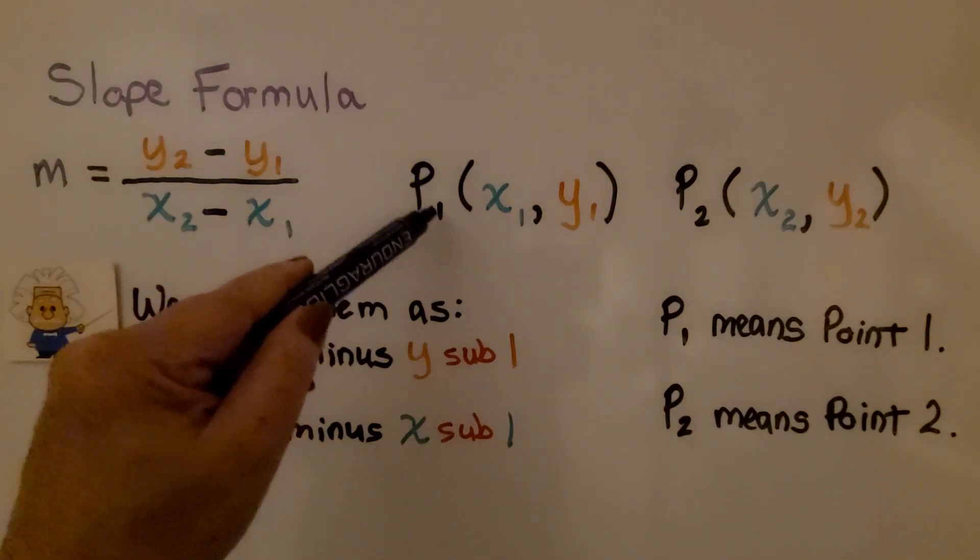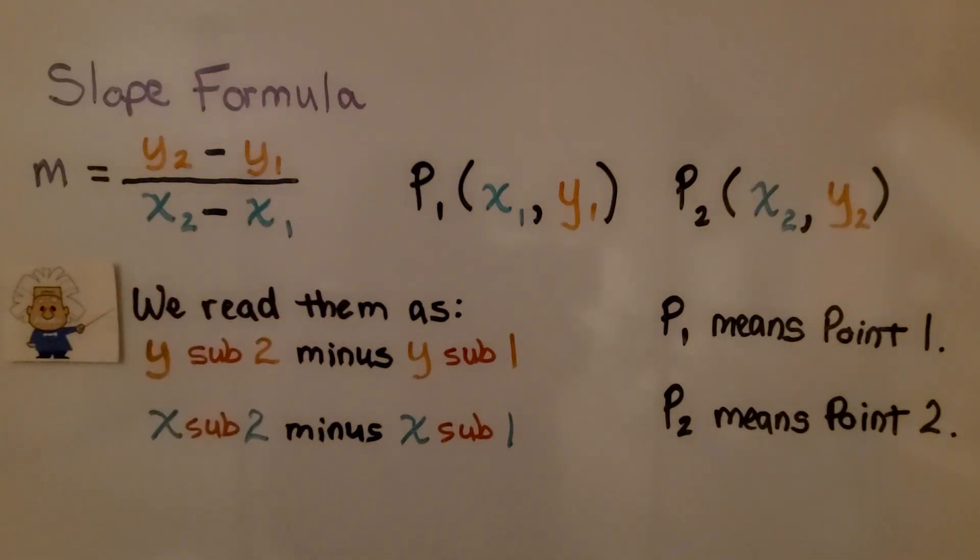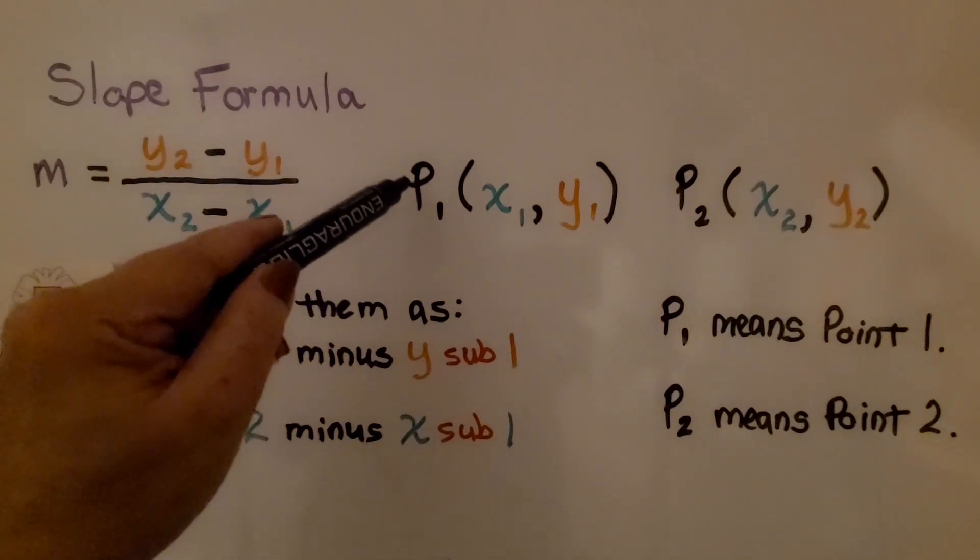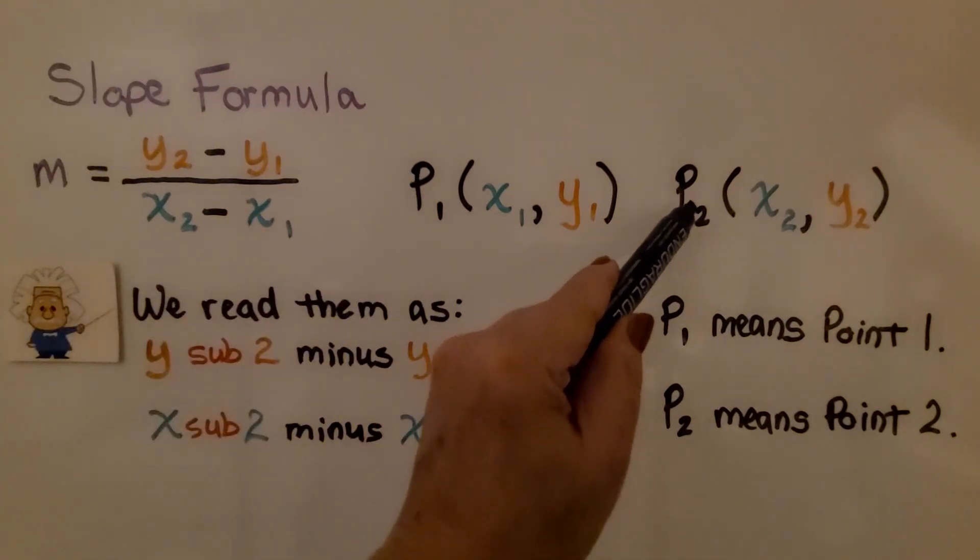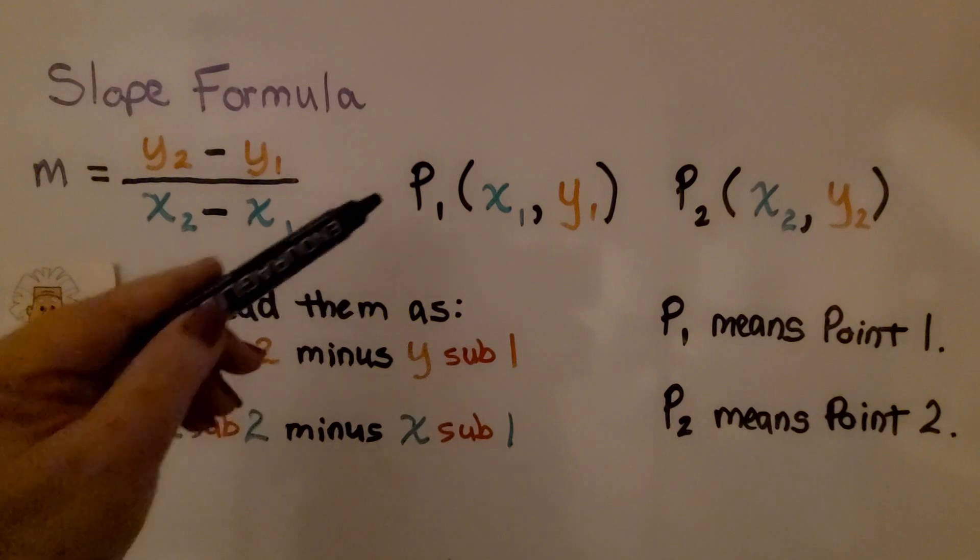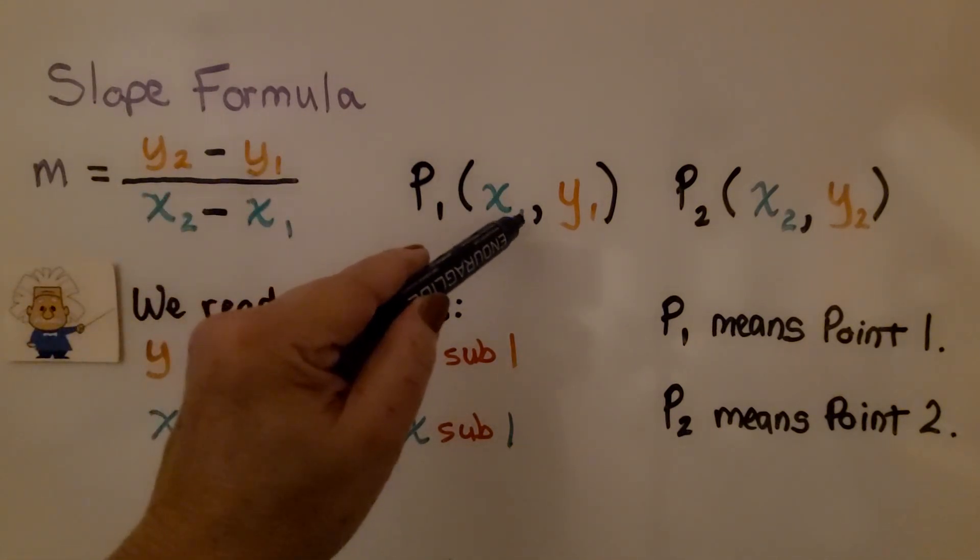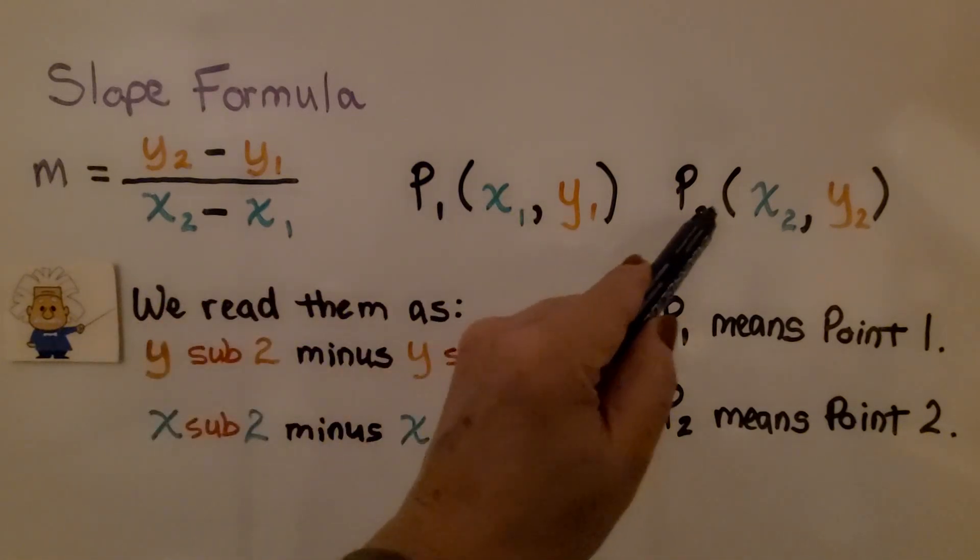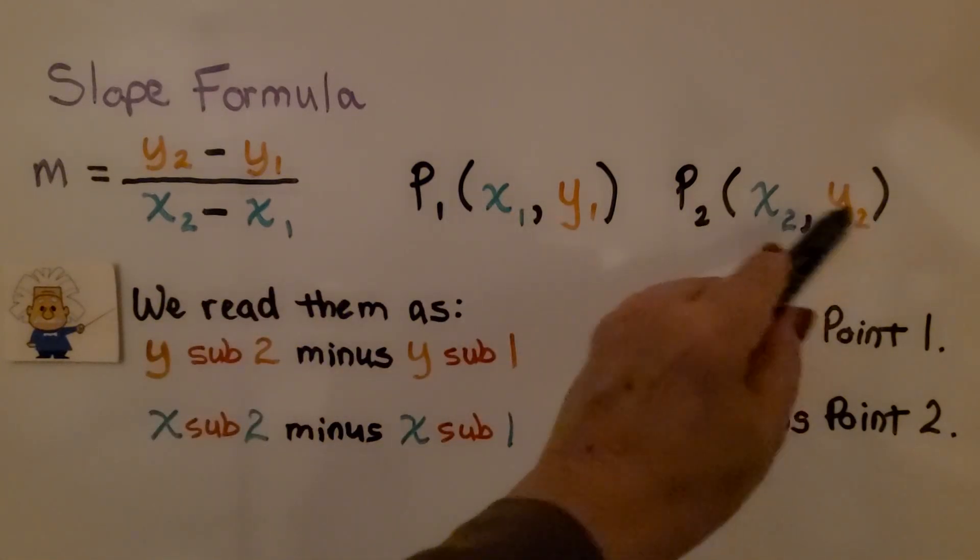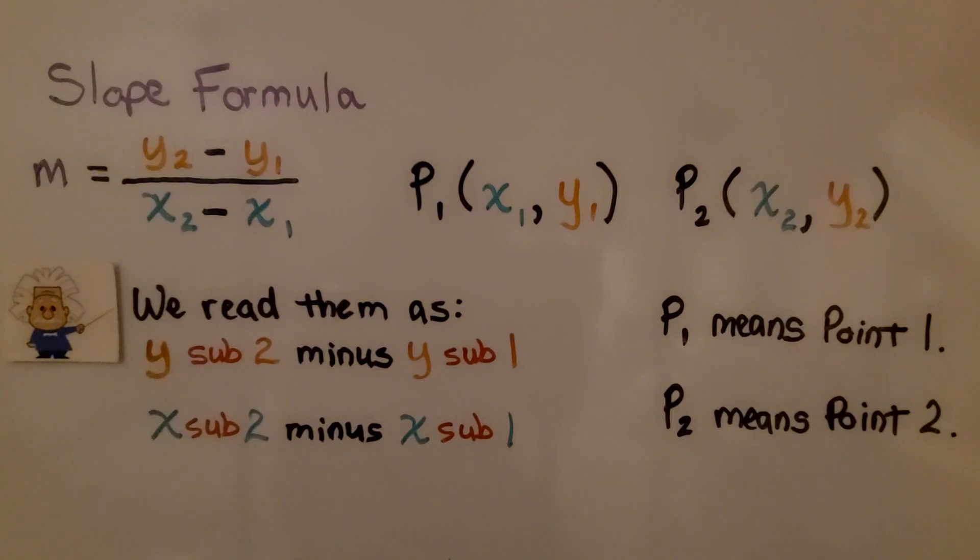Here we have a little 1 next to this p. That's a subscript telling us that that's point 1, and this is telling us that it's point 2. Notice that for point 1, it has the same subscripts for the x and y values, and for point 2, they have a 2 for their subscripts. The subscripts help us identify which x and y values we're working with.